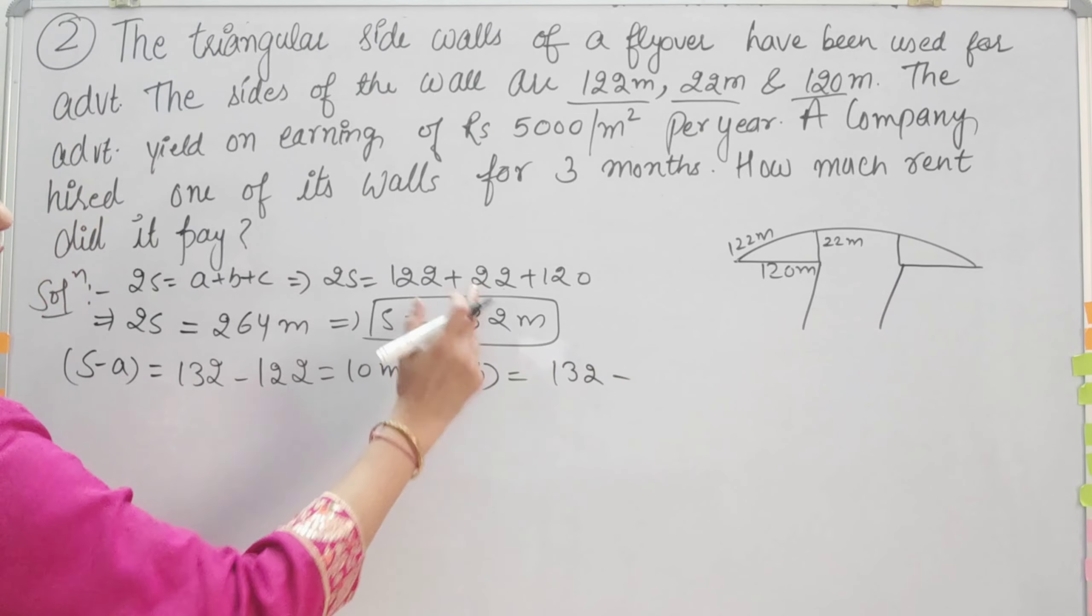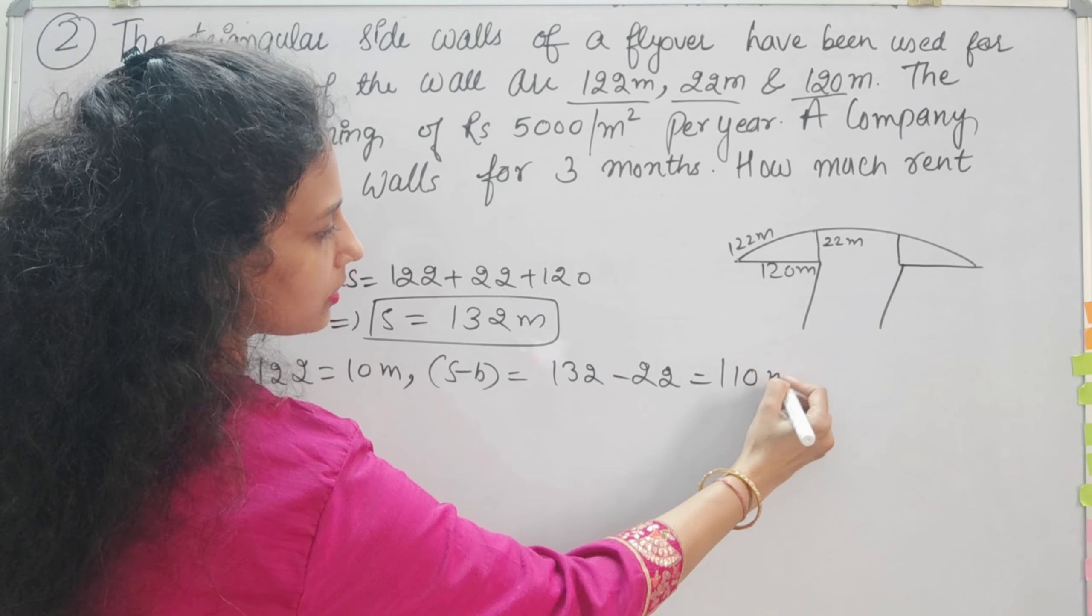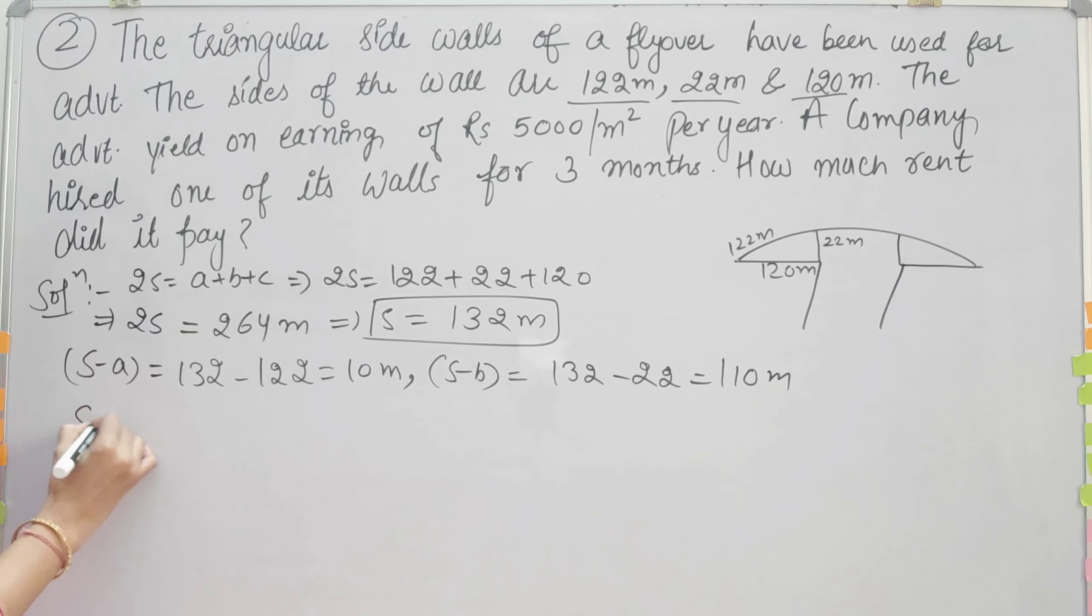S minus b is 132 minus 22, which gives 110 meters. Similarly, s minus c will be 132 minus 120, which gives 12 meters.